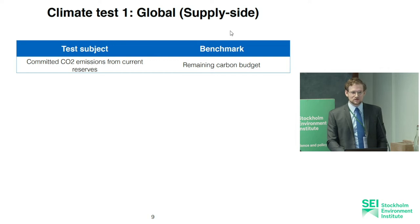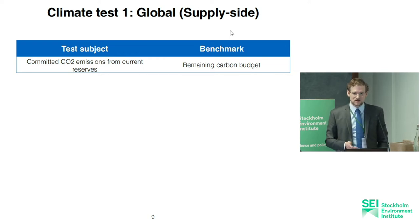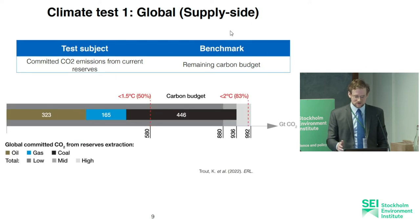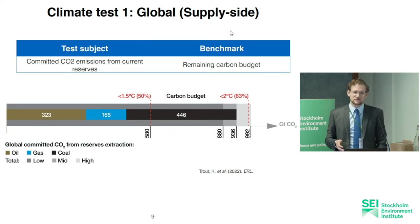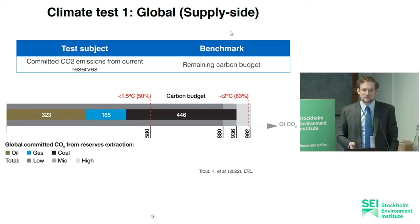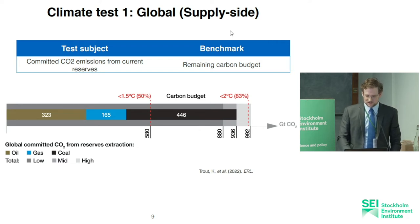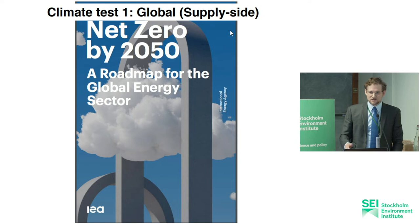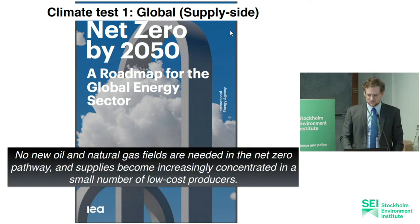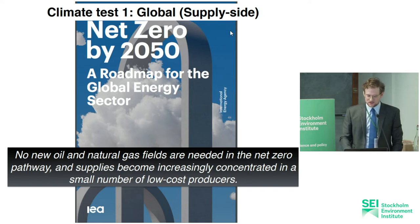For the global picture, we can also look at the supply side. Here's the recent study from Kelly Trout and Greg Muttitt, which shows that existing reserves, if extracted and burnt, would exceed a 1.5 budget and maybe even exceed a two degree budget. And of course the well-known result from the NZE model, that we don't need new oil and gas fields if global demand aligns with 1.5 degrees — another version of a climate test.